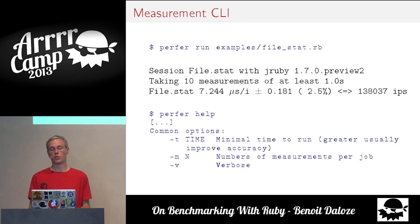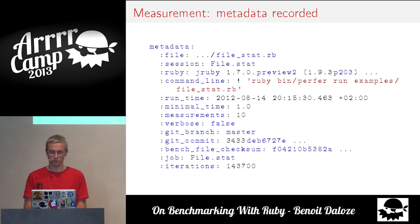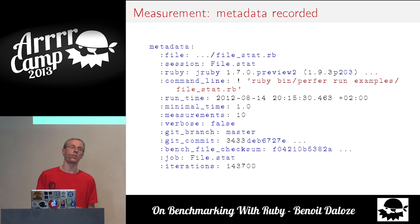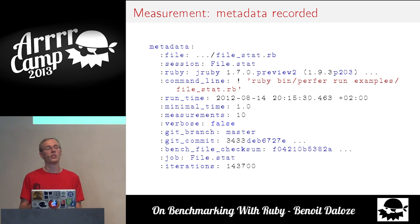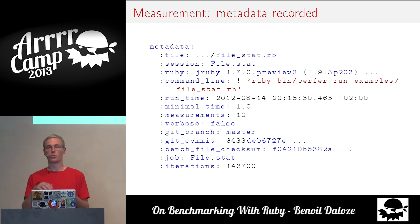There's a verbose option so you can see exactly which measurements are taken. All results are stored to disk — you don't need to copy-paste anything; they persist. Useful metadata is saved: the file that was run, the session name, the Ruby version, the command line, the runtime, and importantly the git branch and git commit. So when you're working on your hardware, you know at that commit it had that performance, and you can reproduce it later. There's also a benchmark file checksum section, so when the benchmark changes you're aware of it and can decide whether to compare those results.